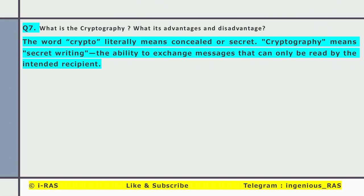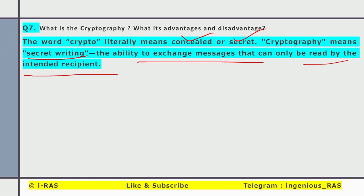The word crypto literally means concealed or secret, whereas cryptography means secret writing — the ability to exchange messages that can only be read by the intended recipient. For example, I send a text through the internet to party B. However, there may be chances that my text may be read by someone else. So by cryptography, it was made possible that whatever I send to party B can only be read by party B.